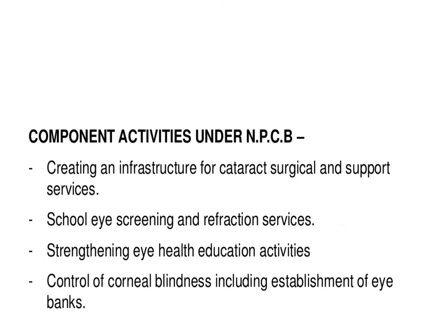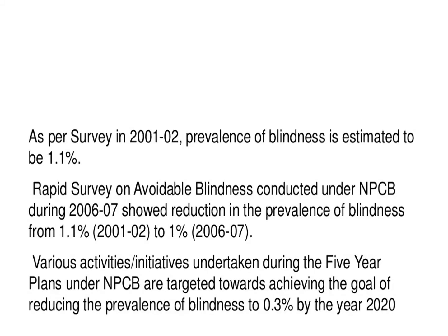The component activities under NPCB are: 1. Creating an infrastructure for cataract surgical and support services. 2. School eye screening and refraction services. 3. Strengthening eye health education activities. 4. Control of corneal blindness including establishment of eye banks. As per a survey in 2001–2002, prevalence of blindness was estimated at 1.1%. A rapid survey on avoidable blindness conducted under NPCB during 2006–07 showed a reduction in prevalence from 1.1% to 1%.